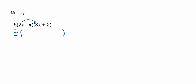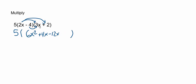We have 2x times 3x gives us 6x squared. Then 2x times 2 is 4x. Then negative 4 times 3x is minus 12x. And finally, the last multiplication would be the negative 4 times 2, which is negative 8, and we write that as subtract 8.